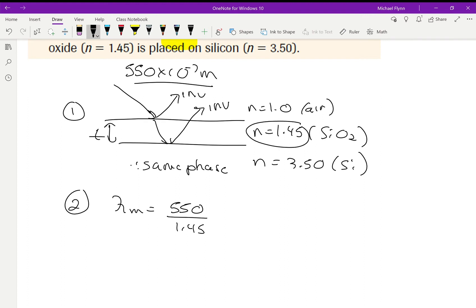Okay. So, I take on my calculator. And I just go 550 divided by 1.45. I get 379.31 nanometers.